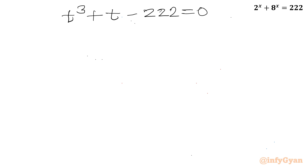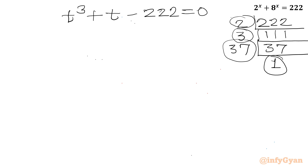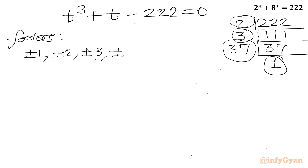Let us find the factors of 222. The number is even, so it is divisible by 2. Dividing gives 111; since 1+1+1=3, it is divisible by 3, giving 37. Since 37 is prime, the prime factorization is 2 × 3 × 37. So the factors are ±1, ±2, ±3, ±37, and their combinations.